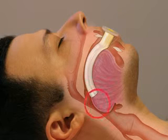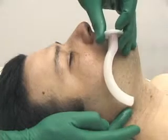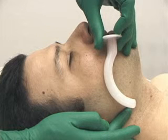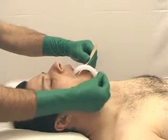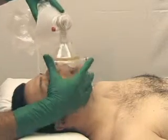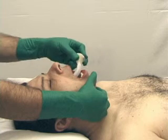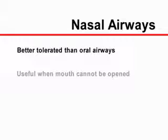Too small an oral airway may push the tongue against the oropharynx. Too large an oral airway may push against the epiglottis and trigger laryngospasm. The correct size of an oral airway may be estimated by holding the airway next to the patient's mouth; the tip should reach the angle of the mandible and no further. An oropharyngeal airway can be inserted by depressing the tongue with a tongue blade and advancing the airway towards the base of the tongue. Alternatively, the airway can be inserted upside down and then rotated 180 degrees as it is being advanced posteriorly.